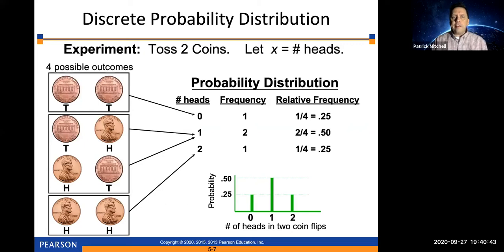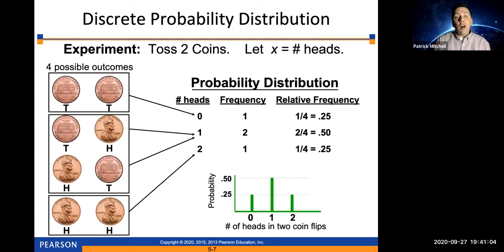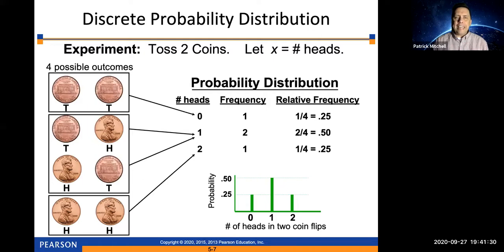Here's a simple example. The experiment is you're going to toss two coins. The random variable x is the number of heads obtained in two tosses of the coin. The possible values for x are zero, one, and two. You could get two tails, tails then heads, heads then tails, or two heads. The probability of getting zero heads is the probability of TT, which is one fourth or 0.25.